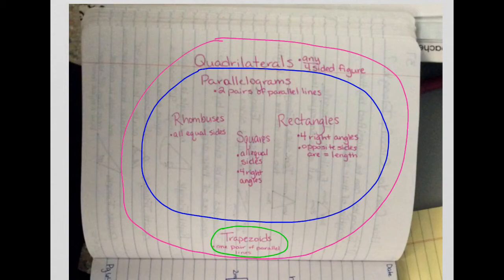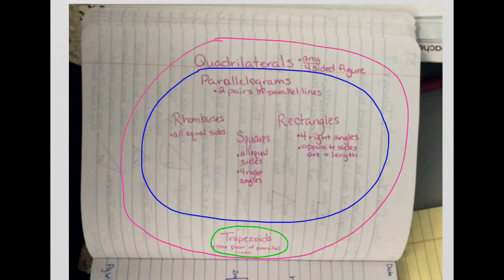The reason you're circling these in different groups is because trapezoids are a quadrilateral that only have one pair of parallel lines, while parallelograms, rhombuses, squares, and rectangles all have two pairs of parallel lines. So all of these in the blue circle have two pairs of parallel lines and the green circle has one pair of parallel lines.